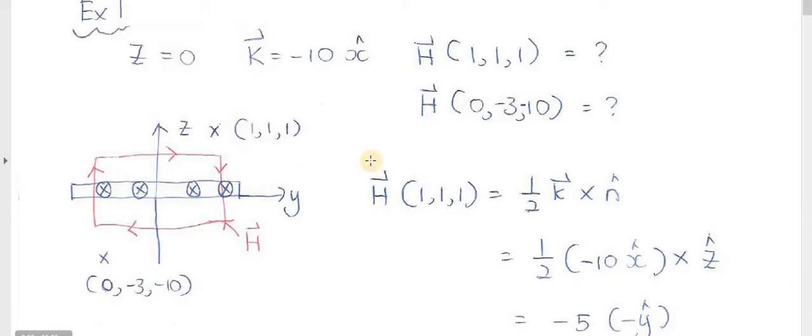So now imagine you have a plane, and this plane located at the location z equals to 0. So here I draw a 2D diagram.